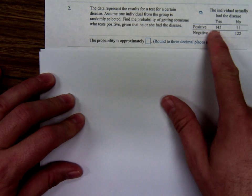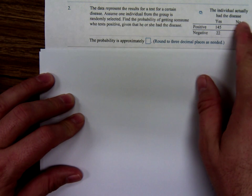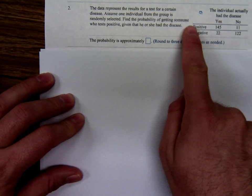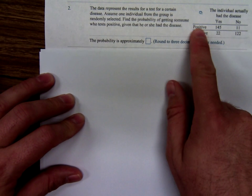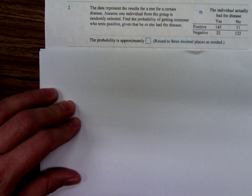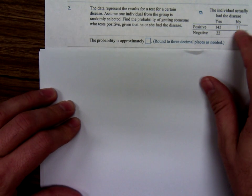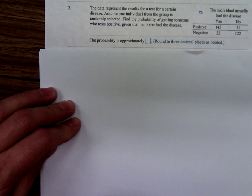Okay, so the individual actually had the disease, yes or no. Did they test positive or negative? There were 145 people that actually had the disease that tested positive. There were 11 people that didn't have the disease but still tested positive.